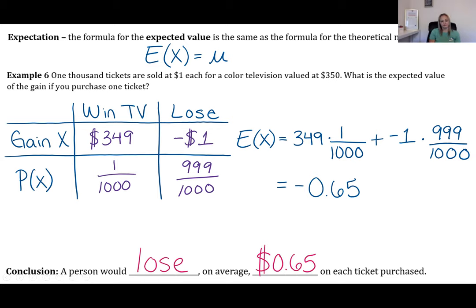You can compute it either way: gain of $350 minus the $1 ticket price, or a gross gain of $350 with the $1 cost as a separate term. Either approach gives the same result of −$0.65 expected value per ticket.